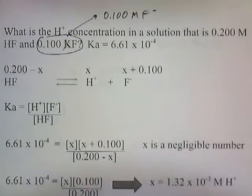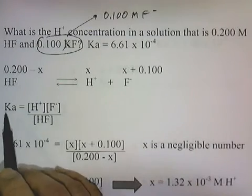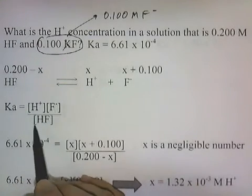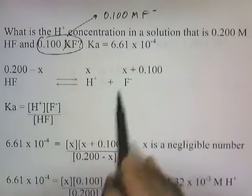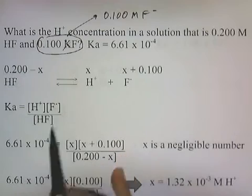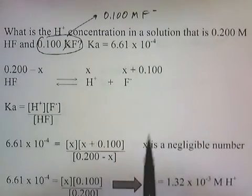Next thing we do is we rewrite the expression for the acid constant. Ka is going to be products over reactants. So, H+ and then F- on top. On the bottom is HF. Products over reactants.